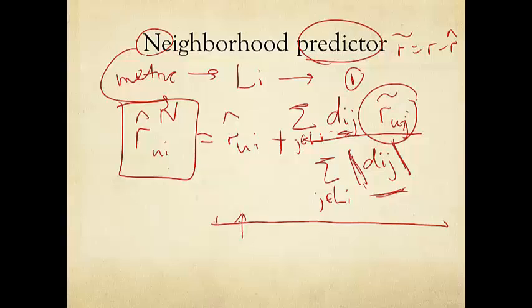One part is the baseline predictor. Again, how do we get to the baseline predictor? Very simple, by solving the least square problems involving these BUs and BIs. Because the baseline predictor r hat is just the lazy average predictor plus BU plus BI for each UI pair.